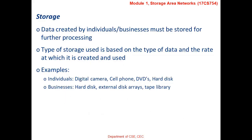Let us understand what we mean by storage. The data created by individuals or businesses must be stored for further processing, and this location where the data is stored is called storage. The type of storage used is based upon the type of data and the rate at which data is created and used. Examples for individuals include digital cameras, cell phones, DVDs, and hard disks. For businesses, they may use hard disks, external disk arrays, or tape libraries for storing information.